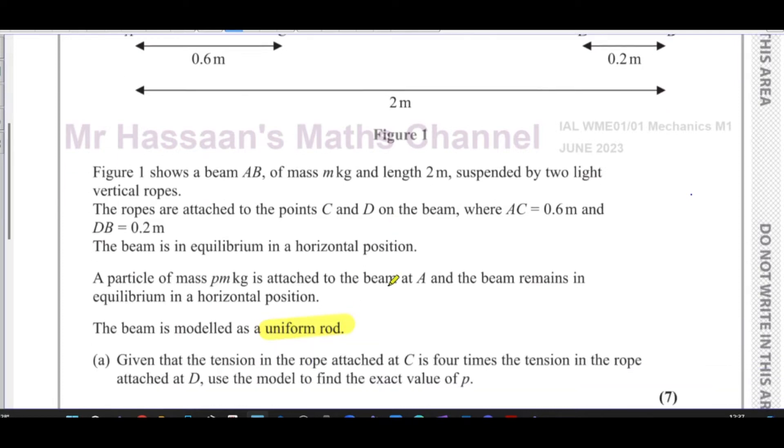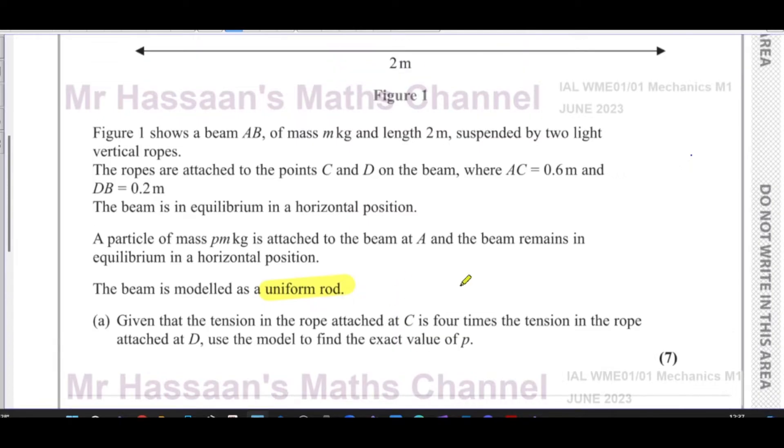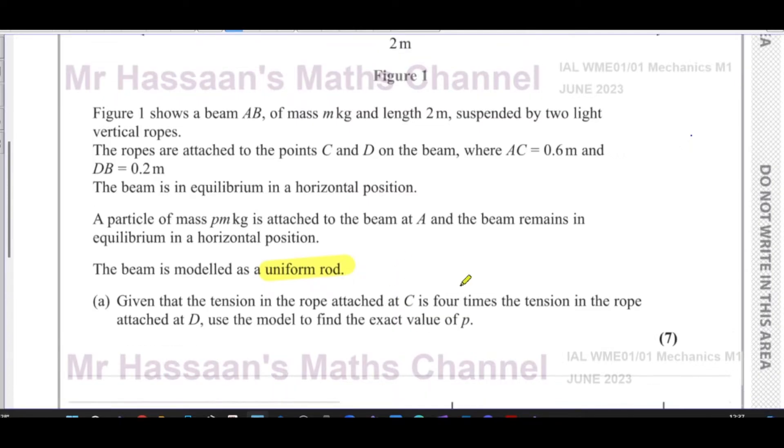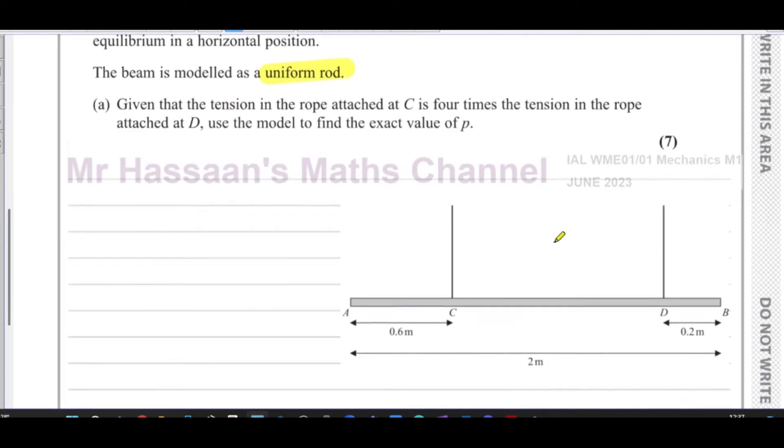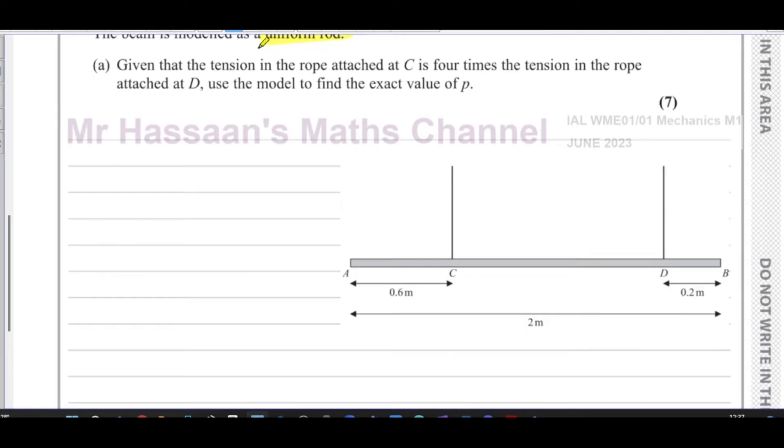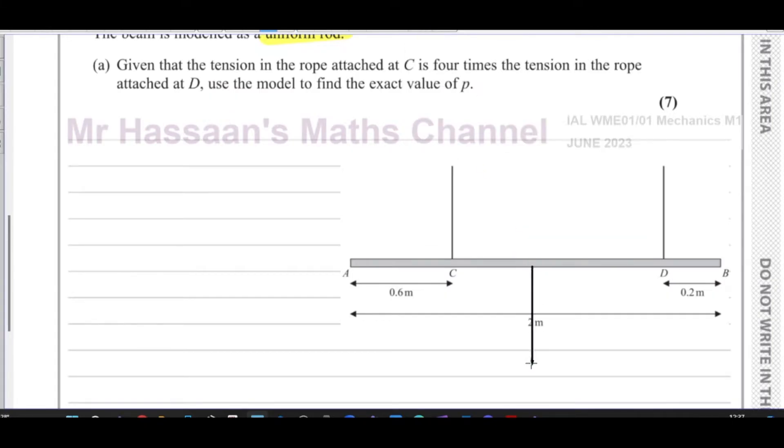We are asked, given that the tension in the rope attached at C is four times the tension in the rope attached at D, to use the model to find the exact value of P. So here we have a few things. We have the weight which is going to act exactly through the center of the beam because it is uniform.